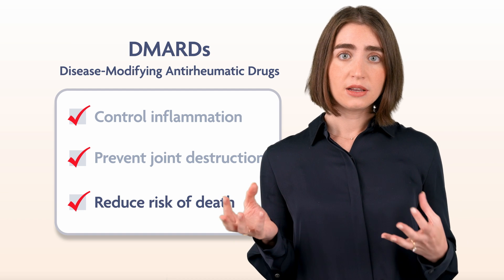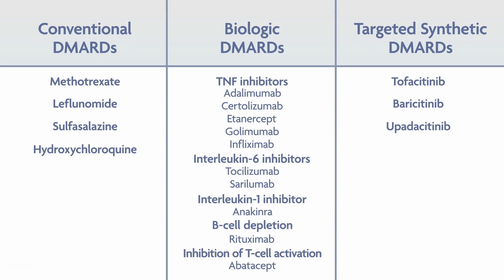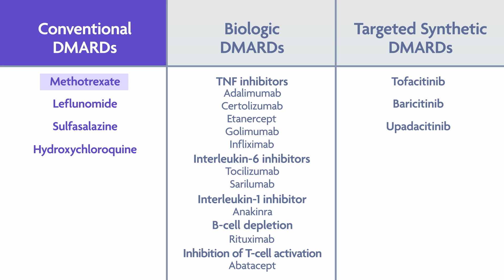There are three classes of DMARDs: conventional, biologic, and targeted synthetic. The conventional DMARD methotrexate, a folate antagonist, is usually the first-line course of treatment. Typically, rheumatoid arthritis would be treated with methotrexate, and about a third of patients will respond to methotrexate alone. Methotrexate was first introduced for the treatment of RA in the mid-1980s and was a huge breakthrough medication. It actually targets a number of pro-inflammatory pathways, and probably one of the most important things it does is upregulate adenosine, which is an anti-inflammatory molecule, in a local inflammatory environment.